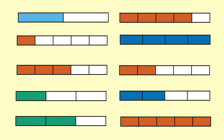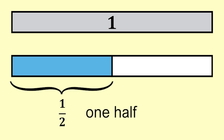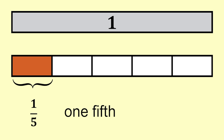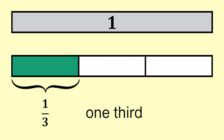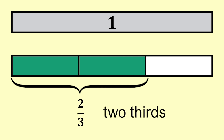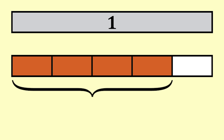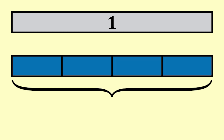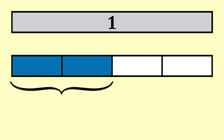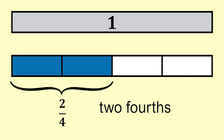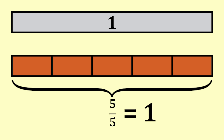Can you name the fractions shown? You can pause if you want to while you think. One out of two is one half. One out of five is one fifth. Three out of five is three fifths. One out of three is one third. Two out of three is two thirds. Four out of four is four fourths or one. Two out of five is two fifths. Two out of four is two fourths. Five out of five is five fifths or one.